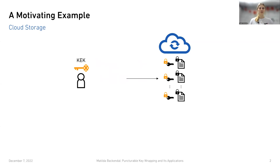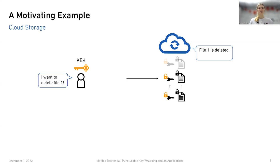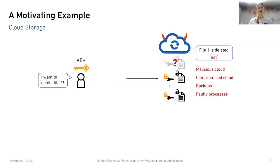Now imagine that you want to delete the file and you send this request to the cloud. The cloud might respond that the file has been deleted. However, since the cloud is not trusted, you cannot actually be sure that the file was properly deleted. For example, if the cloud is malicious, it might simply choose to ignore your request to delete the file. And even if the cloud is honest, it might have been compromised by some external adversary that took a snapshot of the ciphertext before the file was deleted. It can also be the case that the file is kept around for backup or disaster recovery purposes, or that it's simply not properly deleted because of faulty processes.